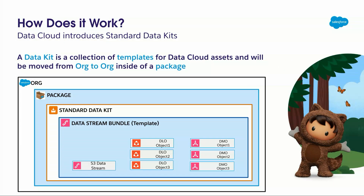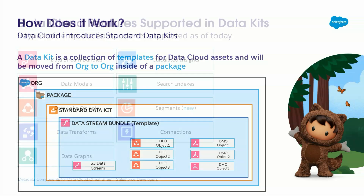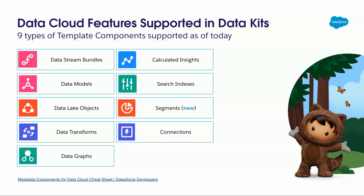What is a standard data kit and how does it work? It's a Matroska doll, actually. You start with your org, and in your org you install a package. In the package there will be a standard data kit, and within the standard data kit there will be templated assets. Data Cloud features nine types of functionality that you can currently put into data kits. The newest ones are segments, and everything beyond what's supported you will need to configure manually in your org.